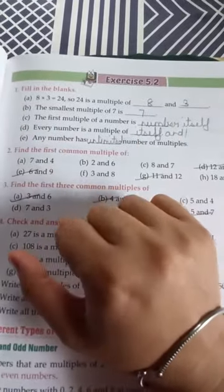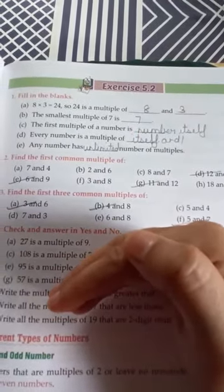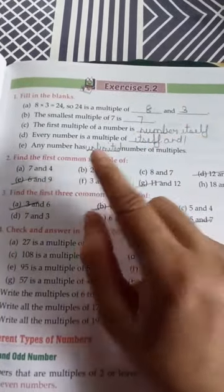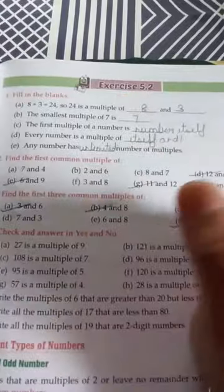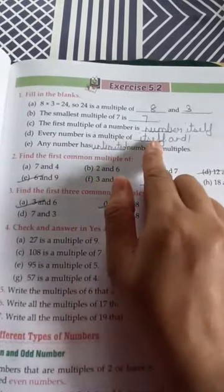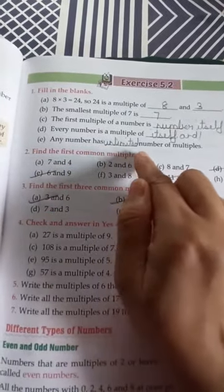Every first number multiple is that number itself. If you are taking the table of 9, now count it: 9×1 is 9. So the first multiple of 9 is 9 itself. Every number is a multiple of itself and 1.